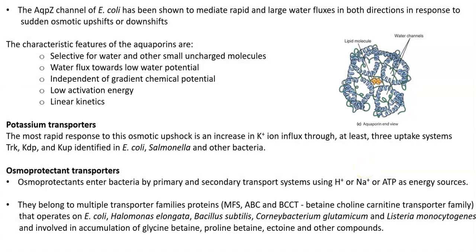Osmoprotectants can enter bacteria by primary and secondary transport systems using proton, sodium, or ATP as energy sources. Multiple transporter family proteins including MFS, ABC, and BCCT — belonging to the betaine-choline-carnitine transporter family — operate in organisms such as E. coli, Halomonas elongata, Bacillus subtilis, Corynebacterium glutamicum, and Listeria monocytogenes. They play a role in the accumulation of glycine betaine, proline betaine, ectoine, and other compounds commonly referred to as osmoprotectants.